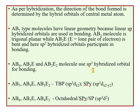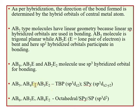Similarly for AB5, AB4E, and AB3E2 type molecules, the central atom undergoes sp3d hybridization. The geometry can be trigonal bipyramidal or square pyramidal. For AB6 type molecules with sp3d2 hybridization on the central atom, the geometry can be octahedral, square pyramidal, or square planar.